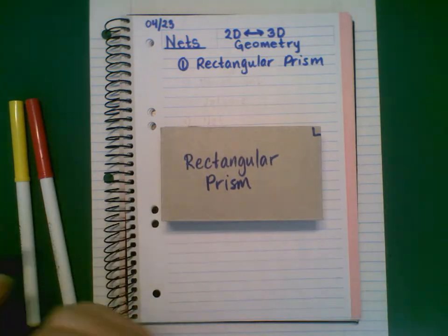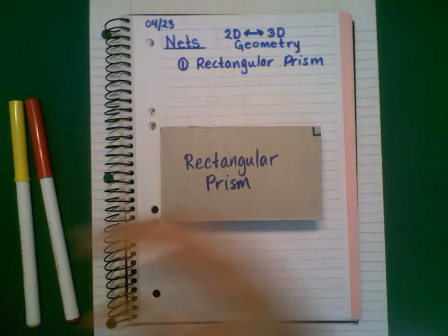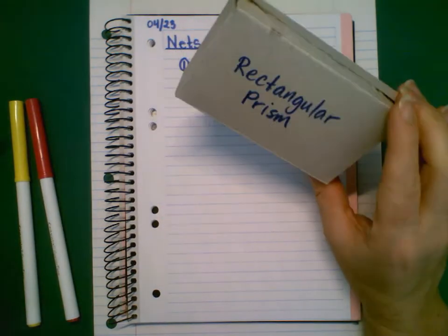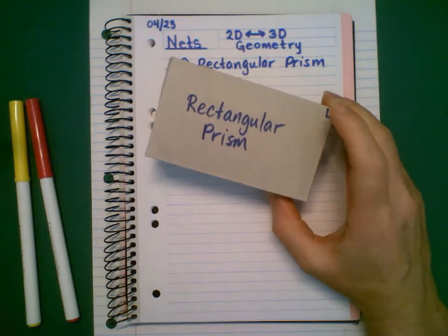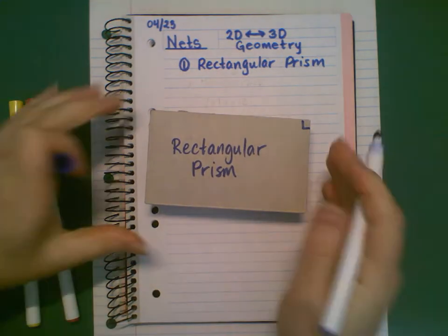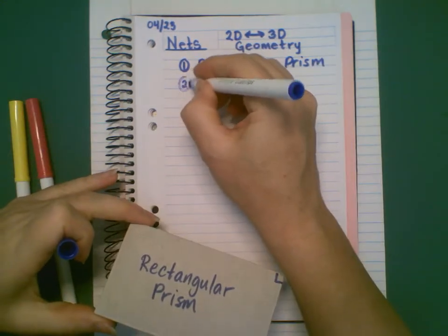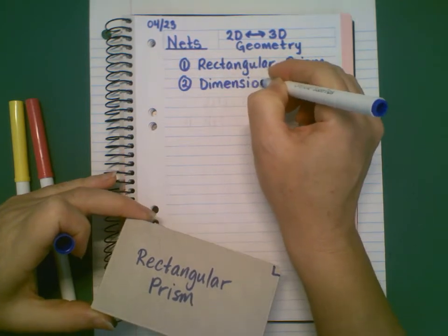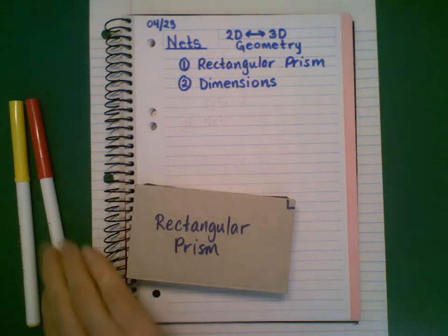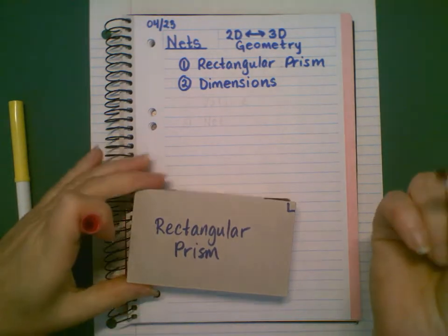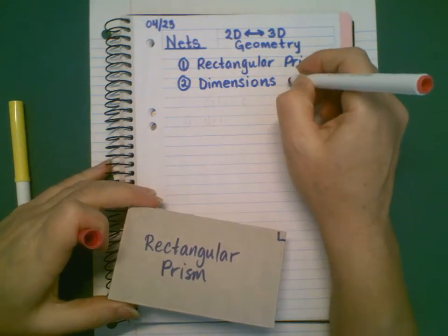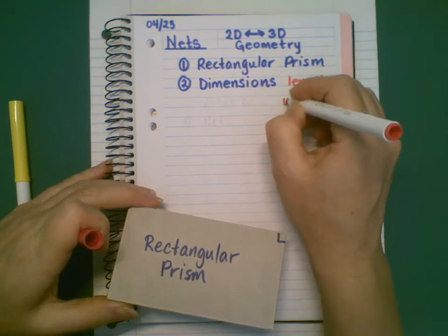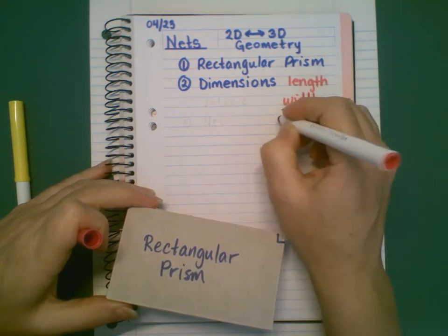So when considering a rectangular prism, if you are being asked to find the space contained within that prism — in other words, the volume — you will need to know the dimensions. And typically the dimensions are going to be described as length, width, and height.